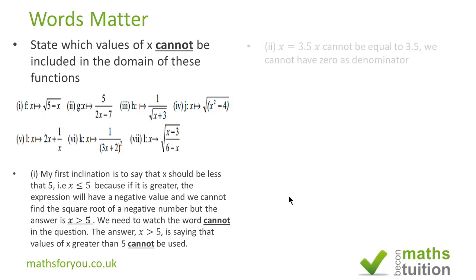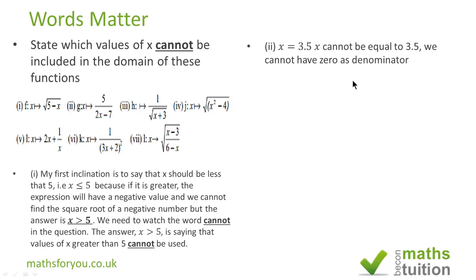For question 2, the actual answer should be: x cannot be equal to 3.5, because if x is 3.5, 2 times 3.5 will give me 7, and 7 minus 7 will give me 0, and we do not want 0 as the denominator — that is undefinable. I hope I am making sense.